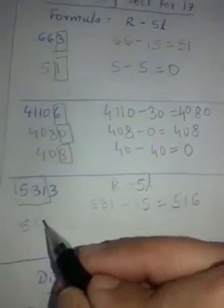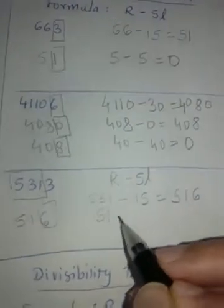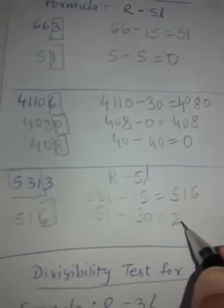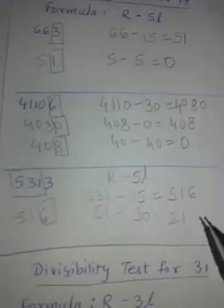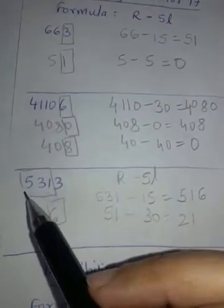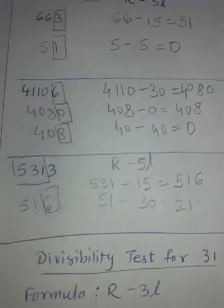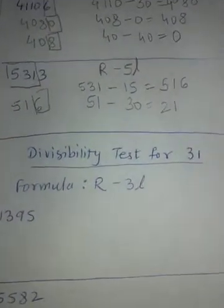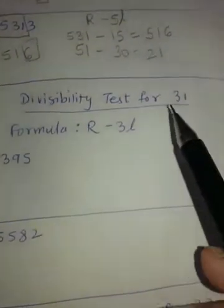51, remaining number 5, 6 times 5 is 30, 21. 21 is certainly not divisible by 17, that means the number 5313 is not divisible by 17.